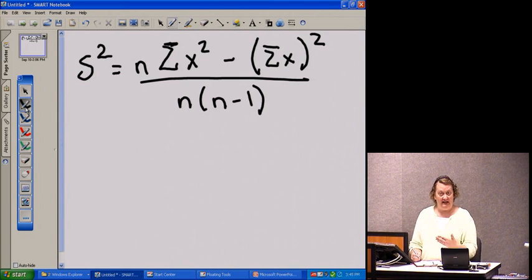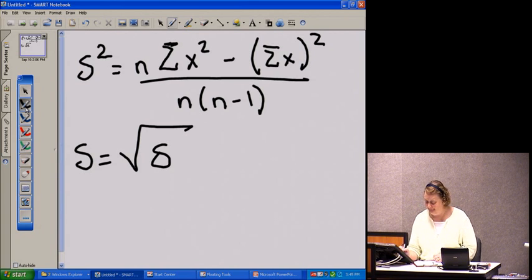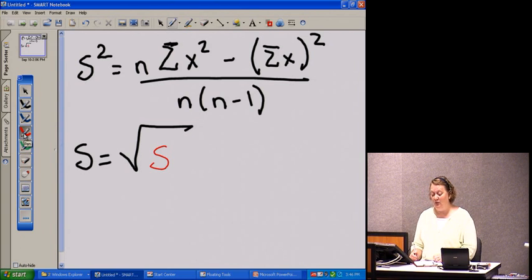Now this is the formula for variance. How do I know that it's the formula for variance? Because it has a squared on it. The formula for standard deviation is the square root of the variance. So the easiest way to do this is to find the variance first and then take the square root of that variance. Once I take the square root of the variance, I'll have the standard deviation.